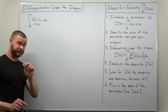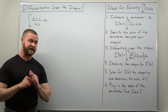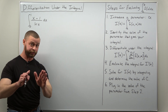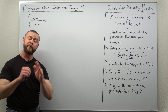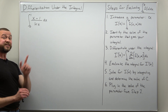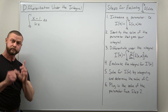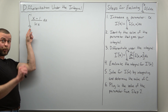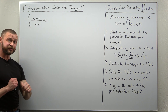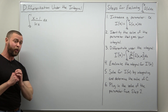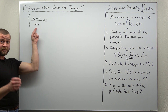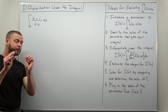The integral from 0 to 1 of (x minus 1) divided by the natural log of x. This is an improper integral — it's improper because there's a problem at x equals 0, where ln(0) is undefined, and also at x equals 1, where ln(1) equals 0, giving division by zero.